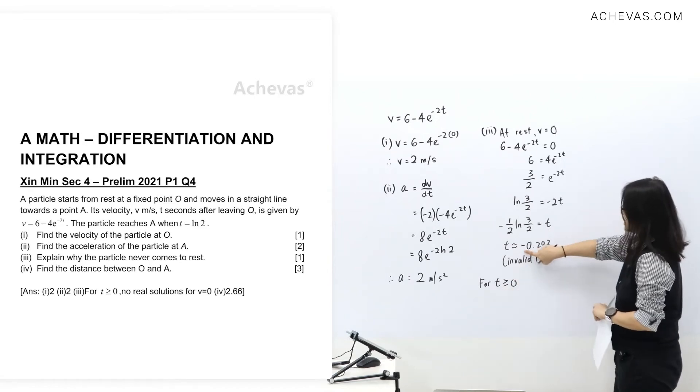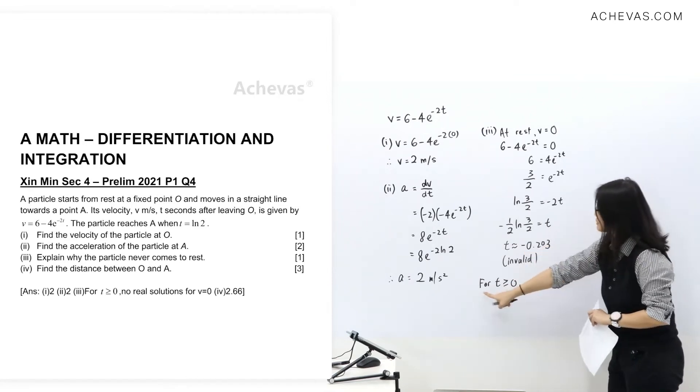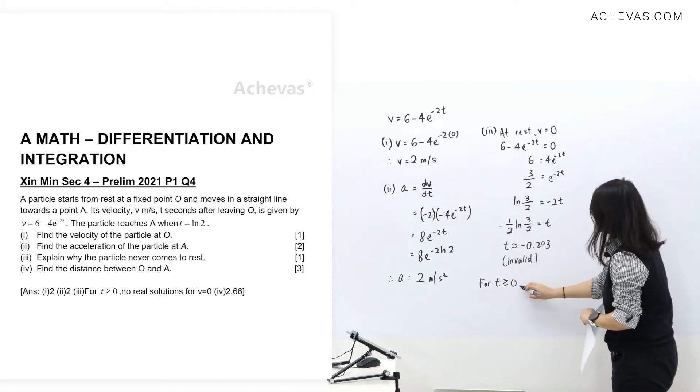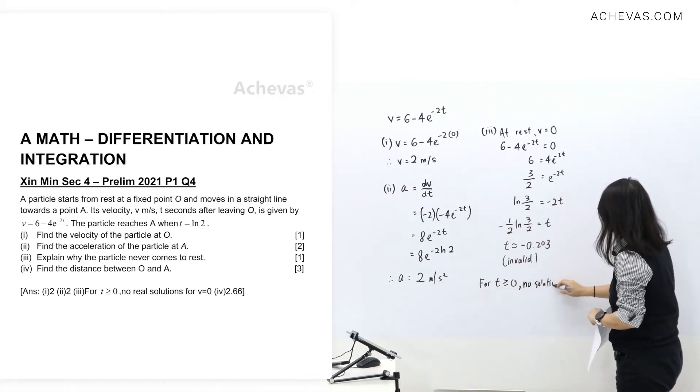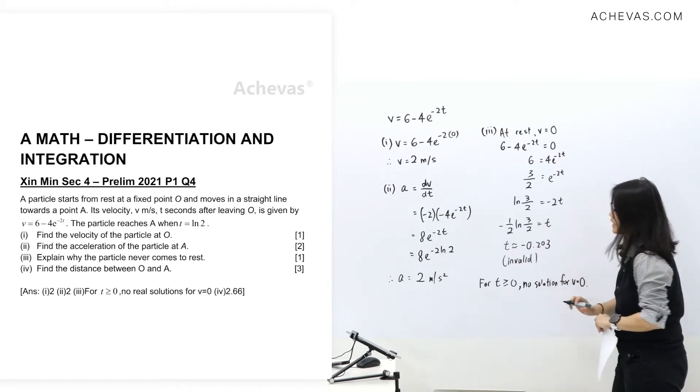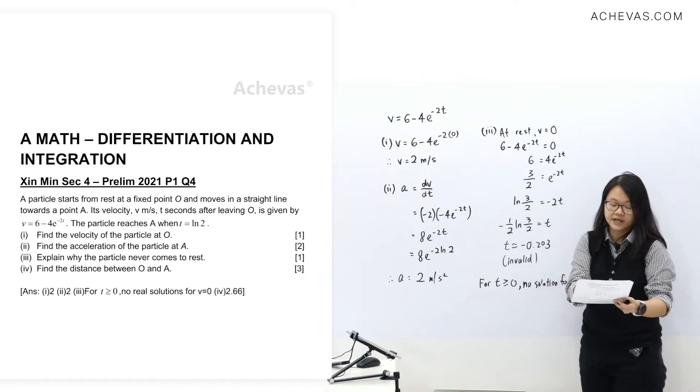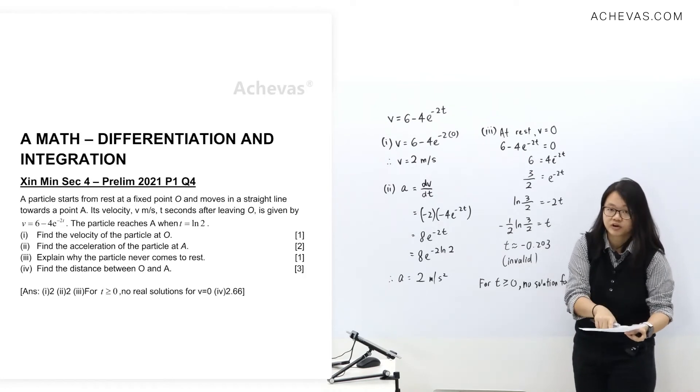We only have it at a negative which is invalid. For T more than equals to 0, no solution for V equals to 0. So therefore we can conclude that the particle never comes to rest by calculating V equals to 0.